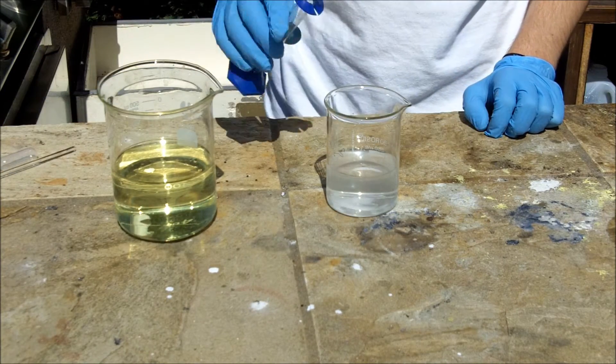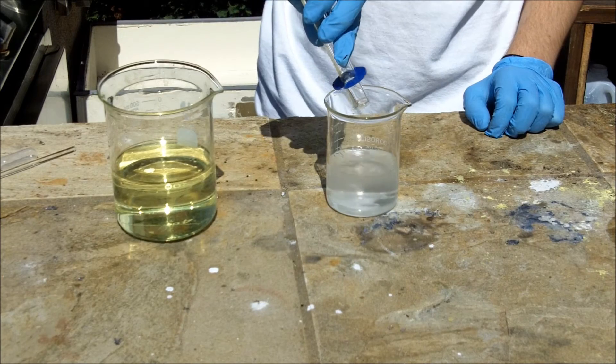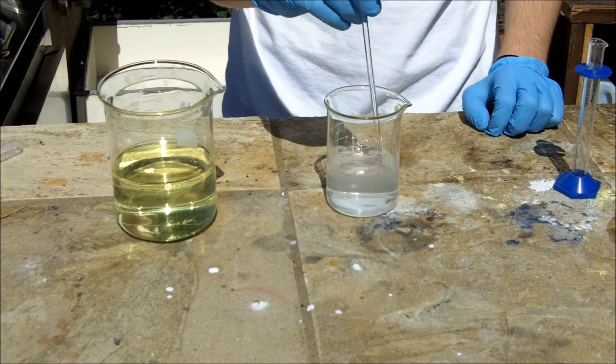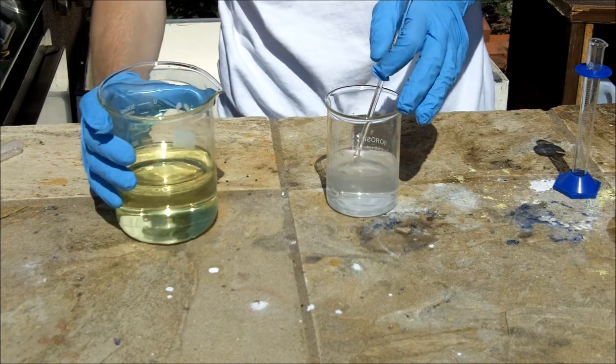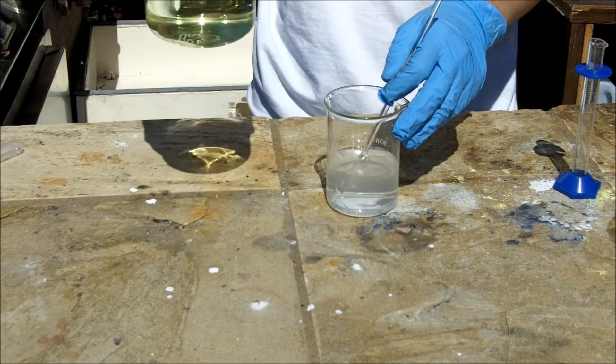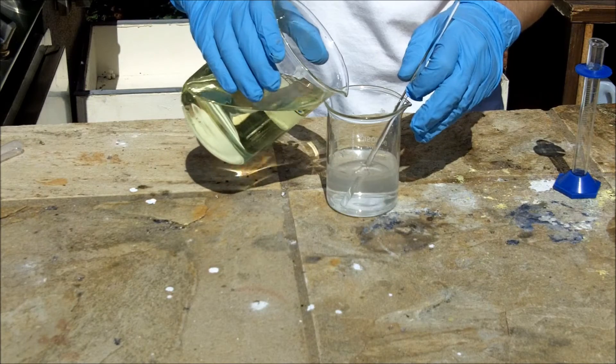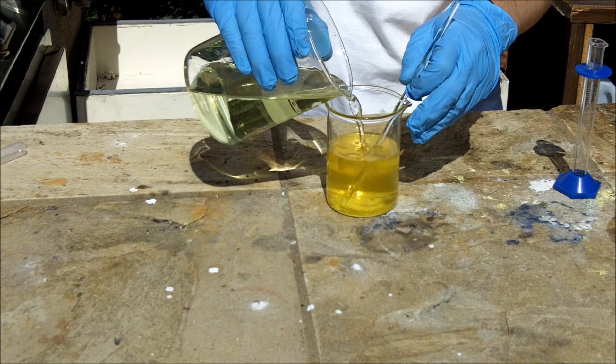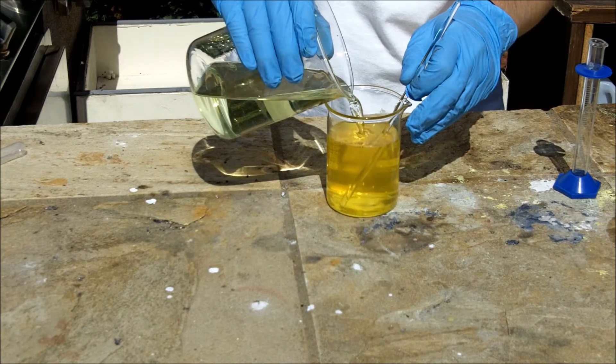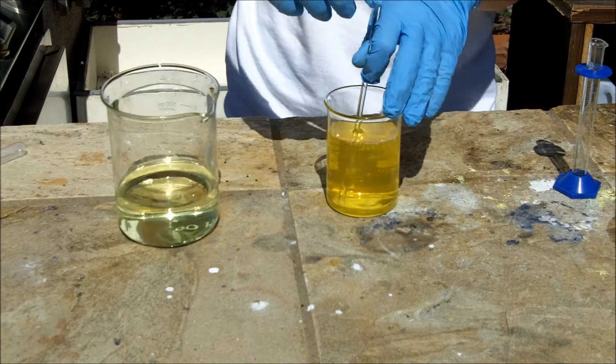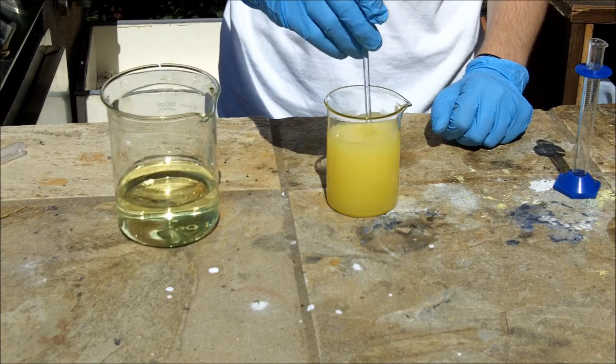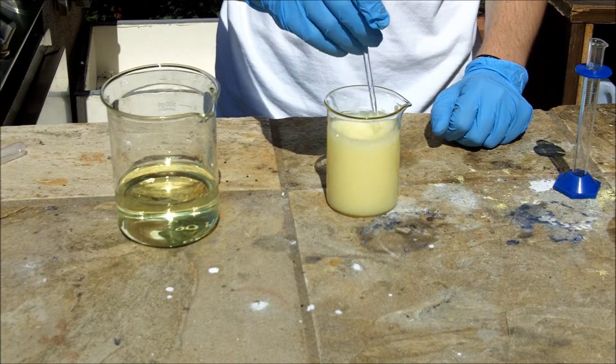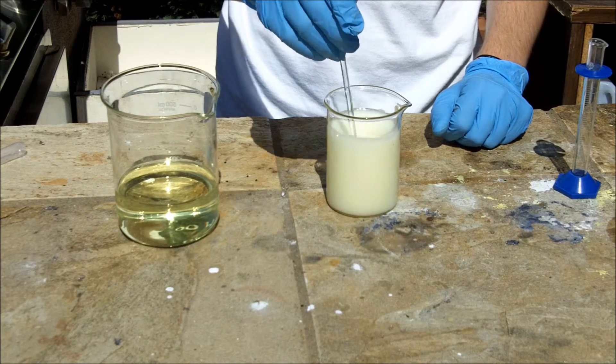Okay, so 4 milliliters of acetone. And now I will add in the 150 milliliters of bleach. We see an interesting color change there.